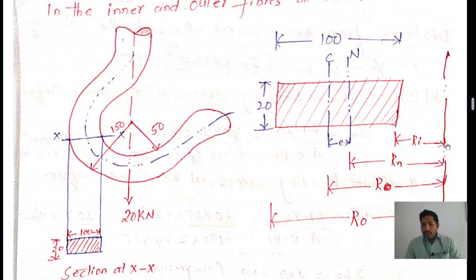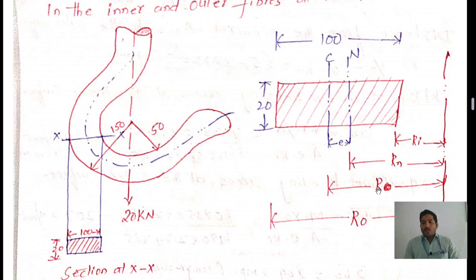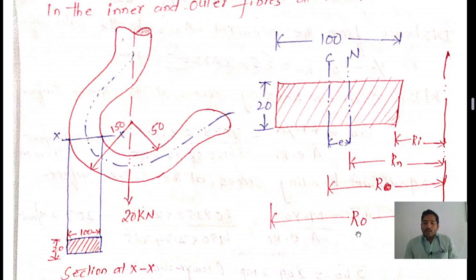The inner radius is represented by Ri, measured from the reference section X-X to the inner surface. The radius of the neutral axis is Rn. The radius of curvature of the centroidal axis is R. The outer radius Ro is the radius of curvature at the outer surface of the rectangular bar.